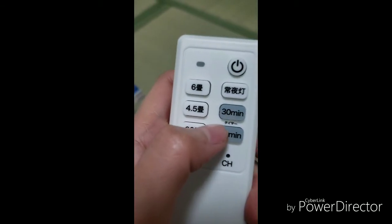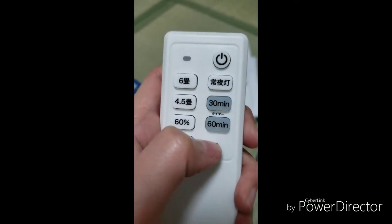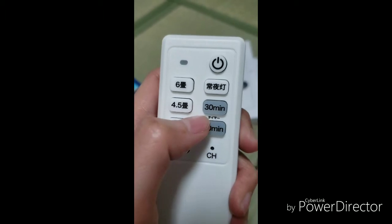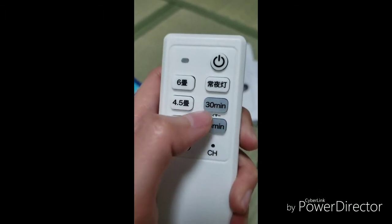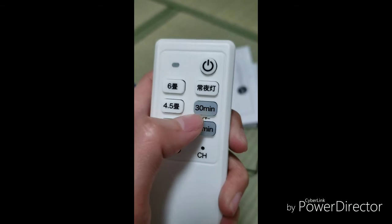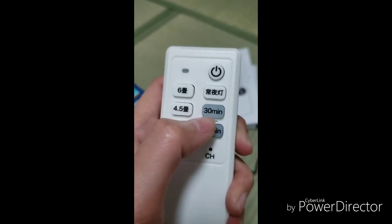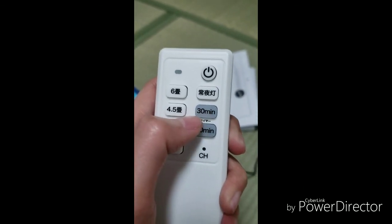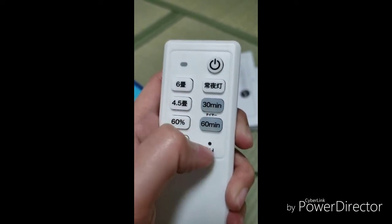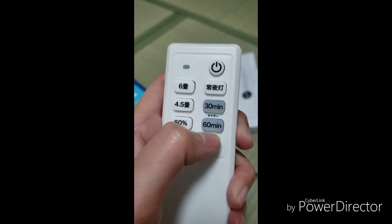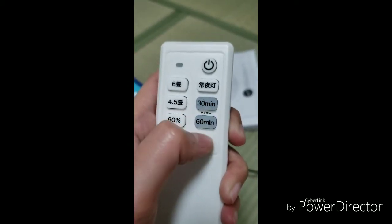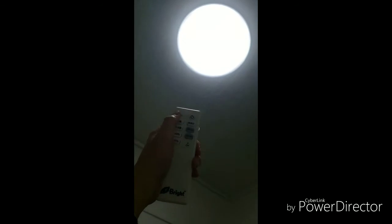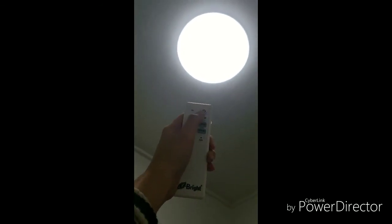And then here, the best part is that the remote control has a timer. 30 minutes. So if you think that you're gonna sleep in about 30 minutes, so choose this one and 60 minutes also. And it will automatically turn off. So yeah, that's how ceiling light works here in Japan.